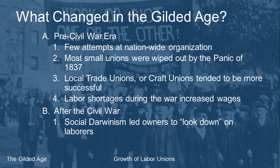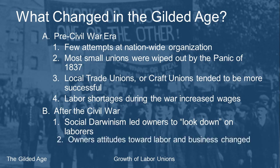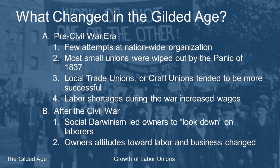Social Darwinism became popular during the Gilded Age. One side of the coin is that business owners succeed because something in their DNA allows them to be successful. The flip side is what leads people to be poor — it must be something in their DNA. So these common, ordinary laborers just weren't seen as good as other people. Owners' attitudes also changed — not only toward labor but also toward the way business operated.